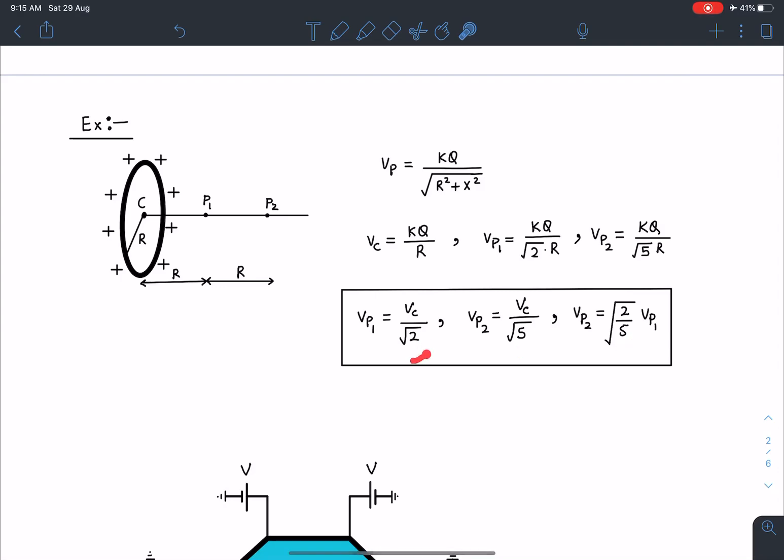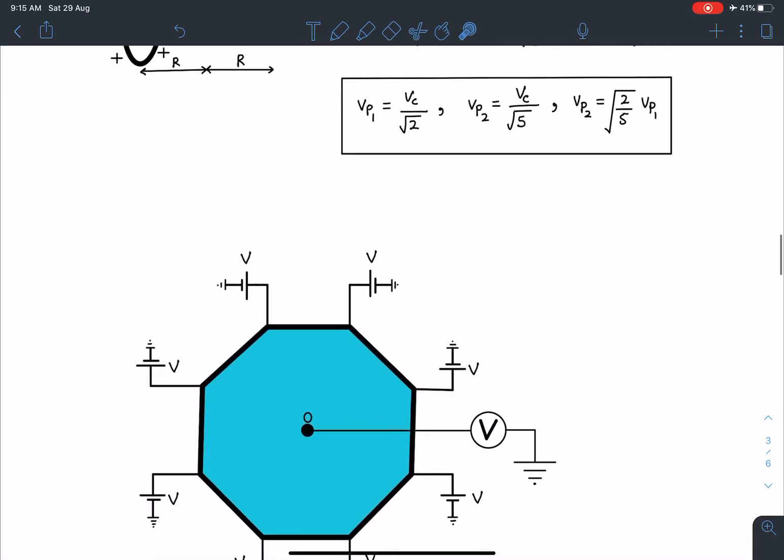Here you can see we can relate these potentials with any other potential by using a number and that number is changing depending on the geometry of it. So VP1 is VC by root 2, VP2 is VC by root 5. Similarly I can relate VP2 equals root 2 by 5 VP1. So every time we are using a number and that is a real number here. Let's move ahead.